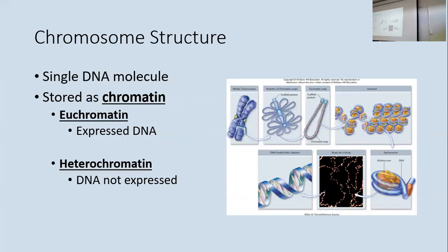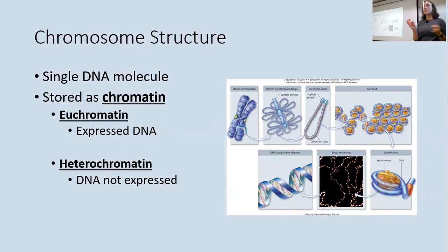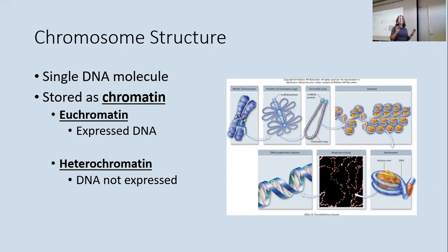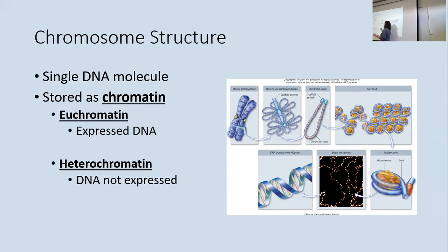Chromosomes are super long and are stored in the nucleus spooled up to keep them organized. This stored form is called chromatin. Not all DNA is expressed — the chromatin being actively used to make proteins is called euchromatin, while large chunks of unexpressed DNA are called heterochromatin, which just kind of takes up space without serving an active coding function.